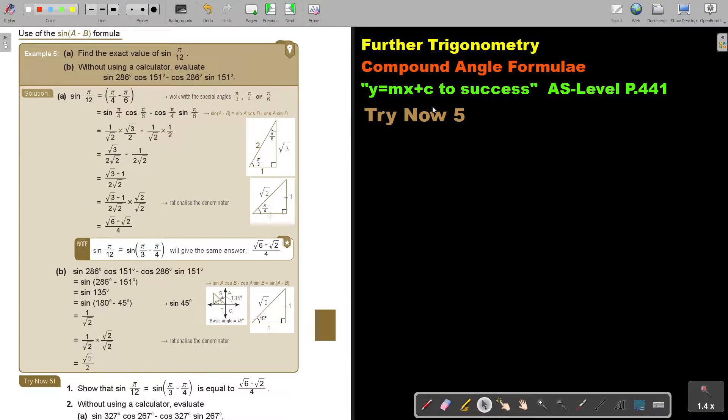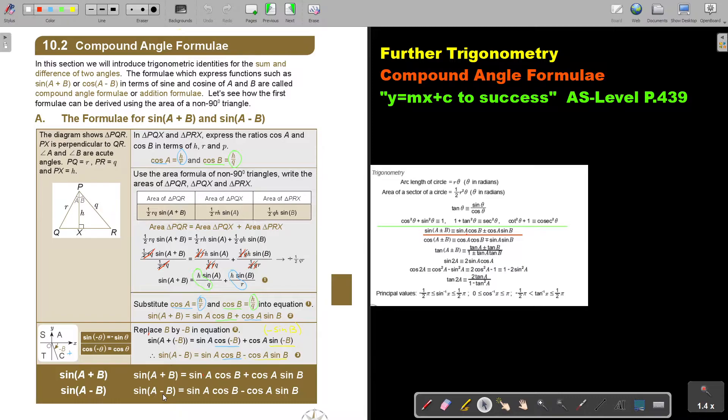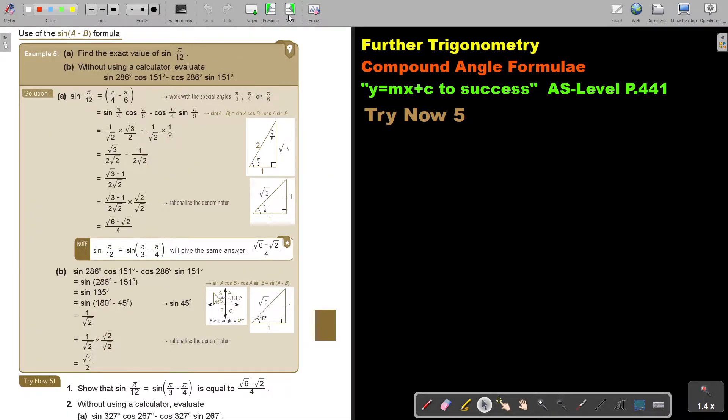In this video, we will continue with compound angle formula. You will find this on page 441 in the Namibia AS level mathematics textbook y equals mx plus c to success. Let's look at another example and now we're going to focus on sin(a - b), not plus b. It's exactly the same as the previous one, but if there's a negative, there will be a negative. If there's a positive, there was a positive. But the rest is exactly the same.